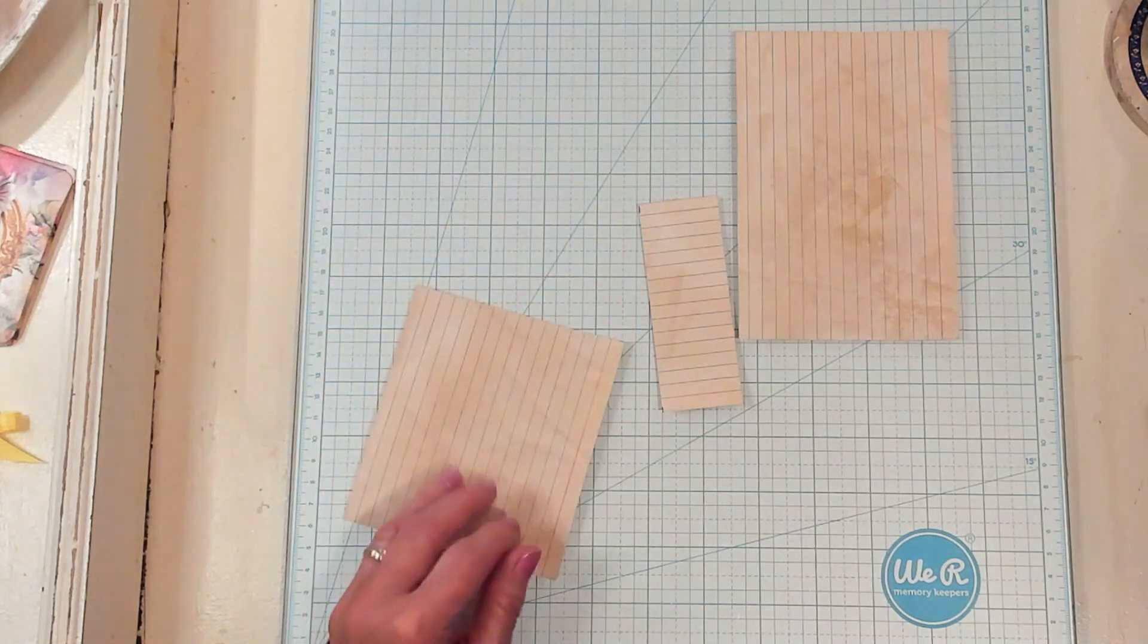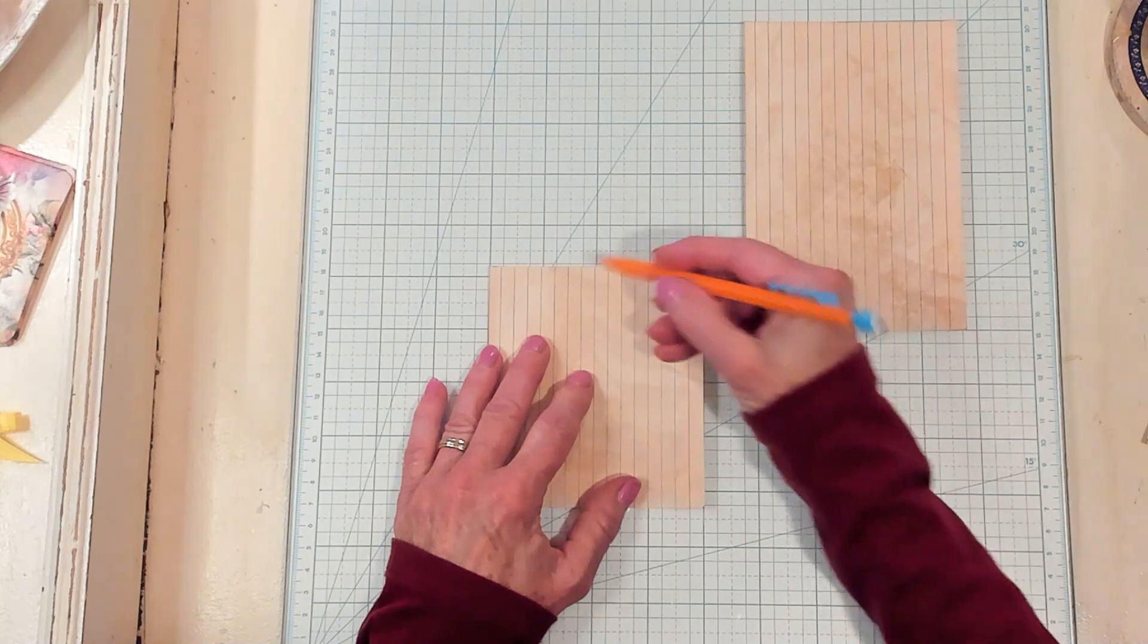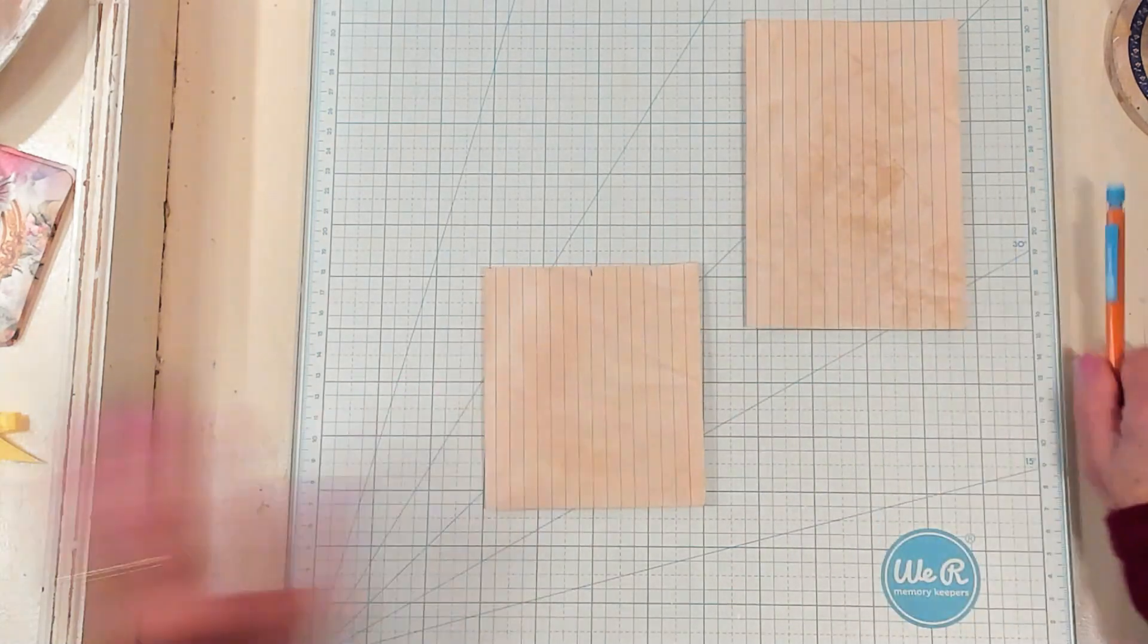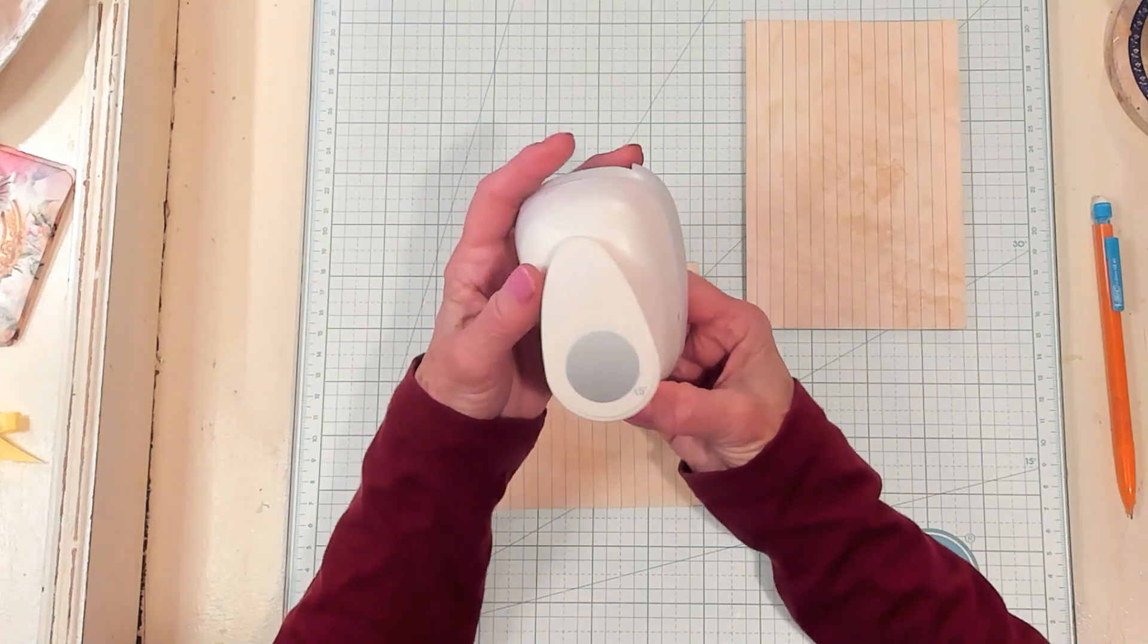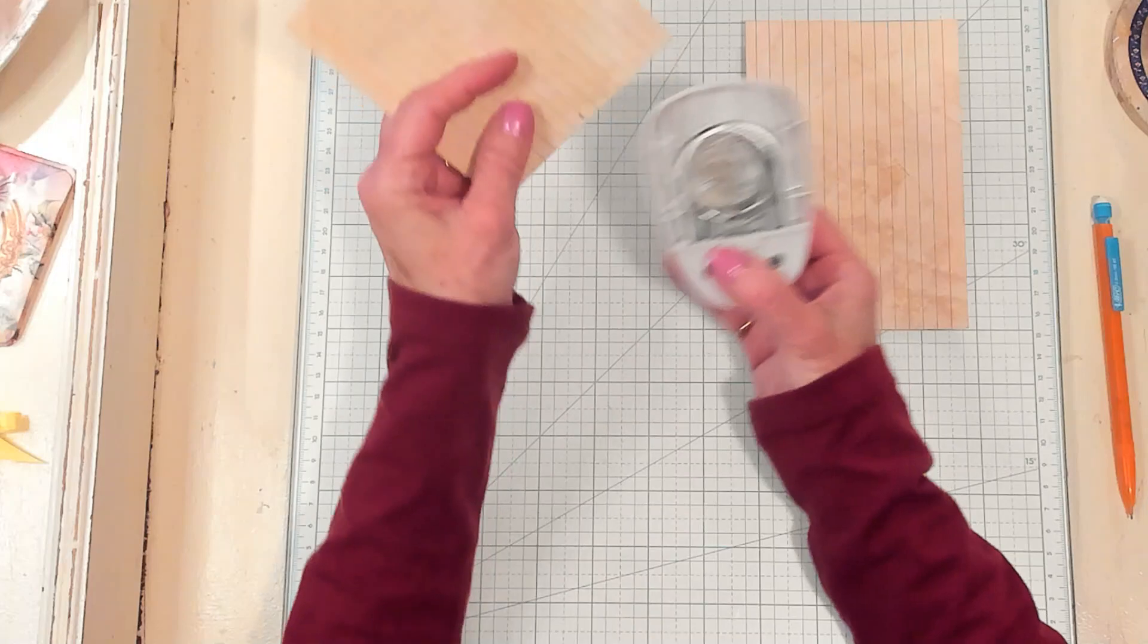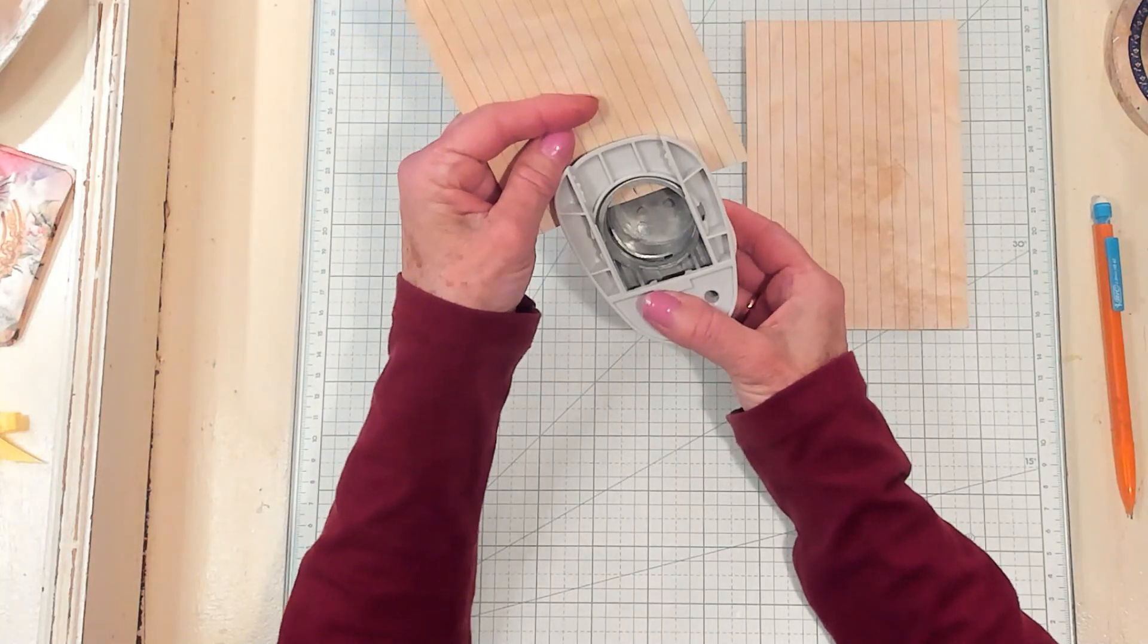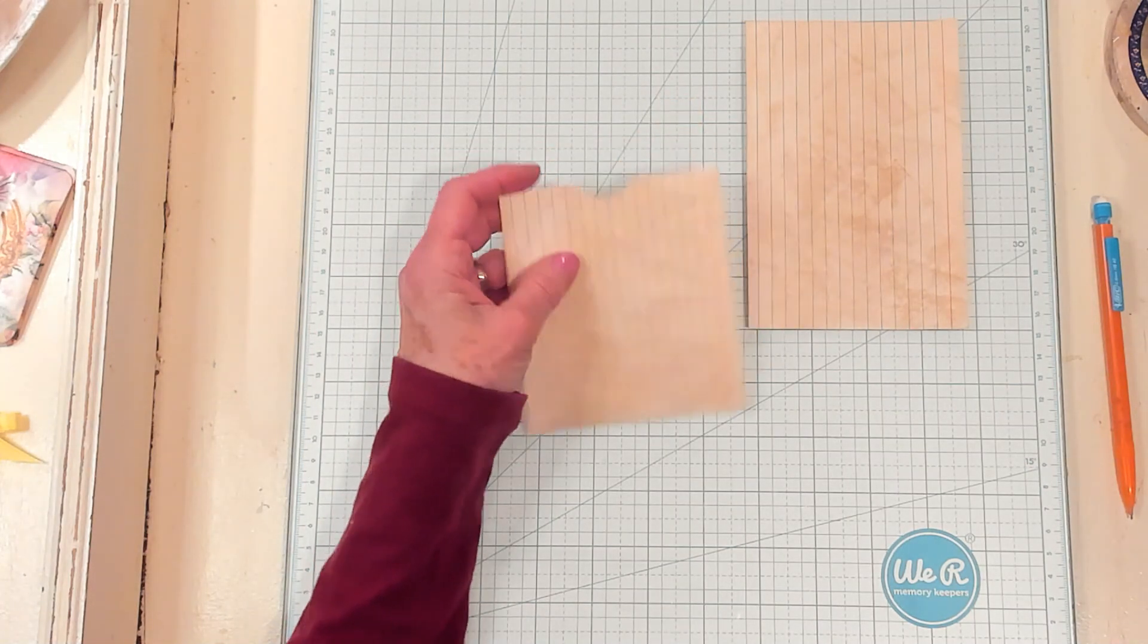And then what I want to do is I want to find the middle of this. And I'm just going to make a little mark here with my pencil. I'm going to bring in my one and a half inch circle punch and I'm simply going to take a little notch out of this right here. All right, so I've got that notched out.